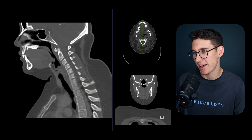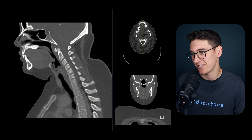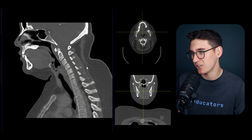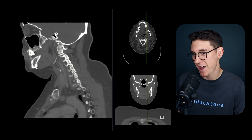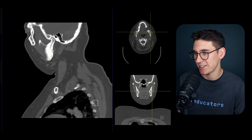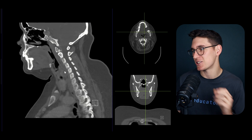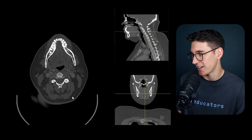On our sagittal slice at the midline we can see the palatine process, the incisive foramen, the alveolar process of the maxillary bone, and the nasal bones. Below the maxilla and the upper teeth we have the mandible - the lower jaw. Extending laterally, we can see the mandible wrapping all the way around. Heading to the axial slice and going down, we can examine the mandible, which houses the lower teeth.